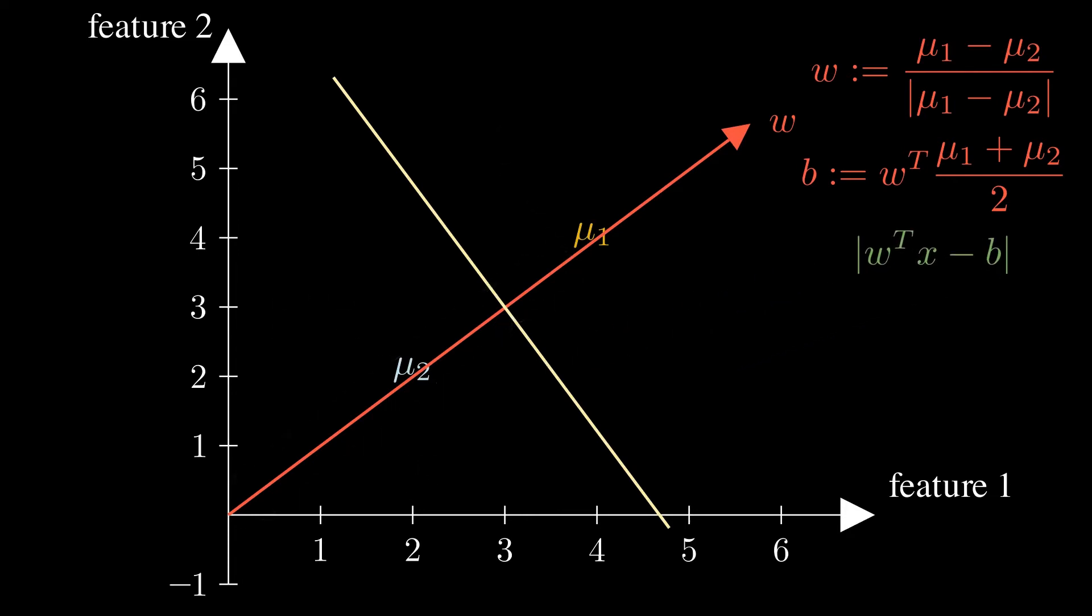Finally, we can say, that our classifier is defined as the sign of the projected new observation, minus the offset b. If the result is larger than 0, it's closer to the mean of class 1, and the data is classified as such. And if it is smaller than 0, it belongs to class 2.